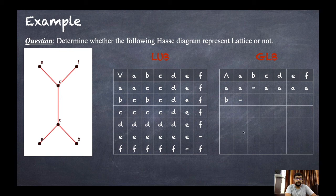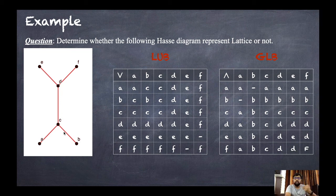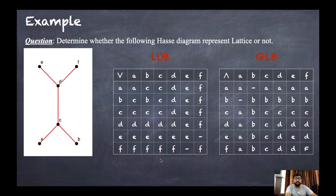For b and a it is dash again since there are no lower points. GLB of b and b is b. GLB of b and c is b. This is how you create the GLB table. For d and c the lower bound is c. For d and e the lower bound is d. For e and d it is d, and e and a it is a.